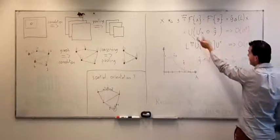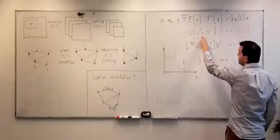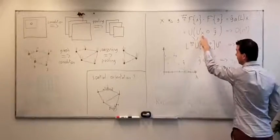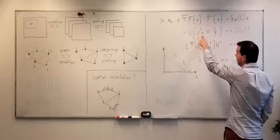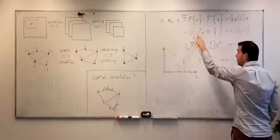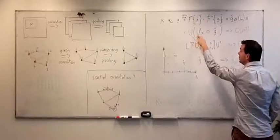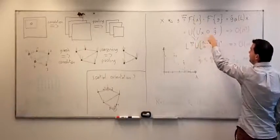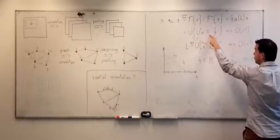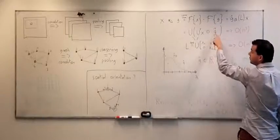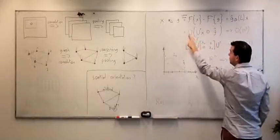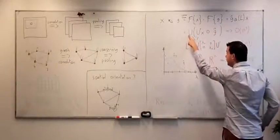We can then transform an input graph signal x into the spectral domain by multiplication with the Fourier basis U, filter it there by a pointwise multiplication — learning filter g-hat — and transform it back into the vertex domain by multiplication with U transpose.